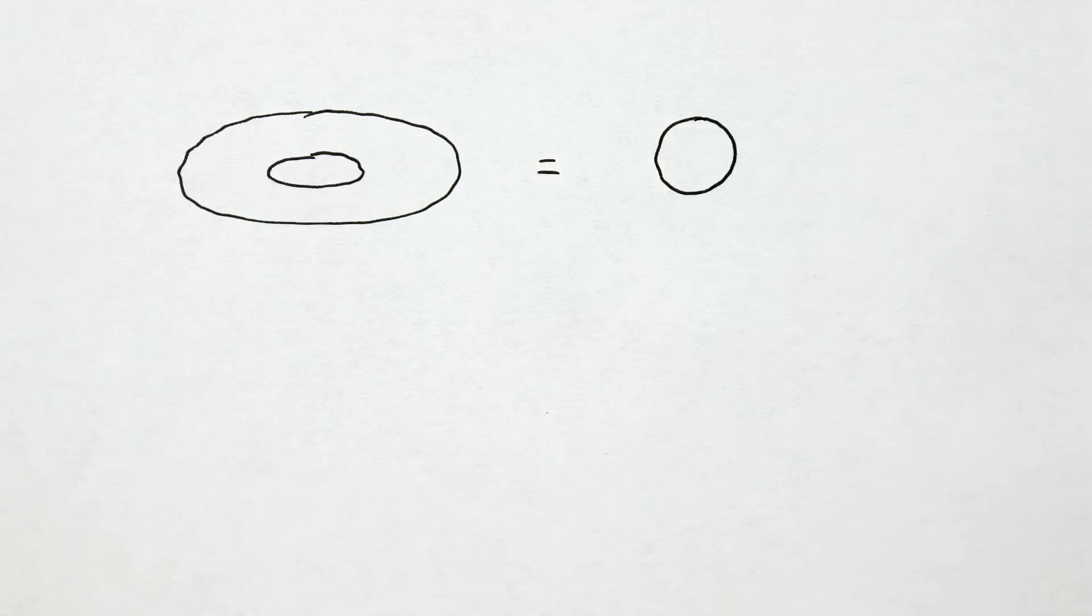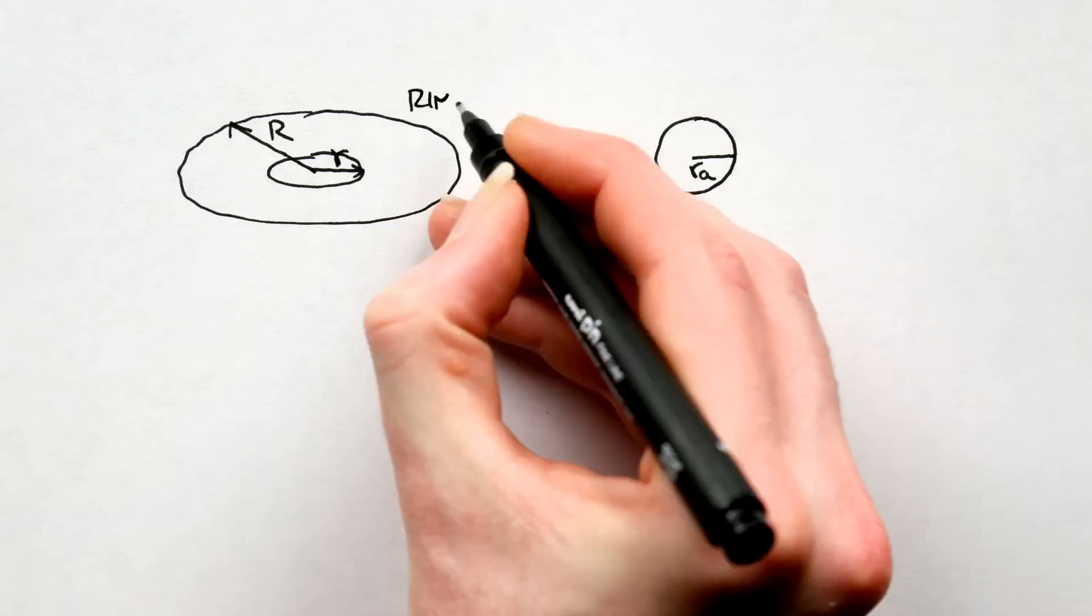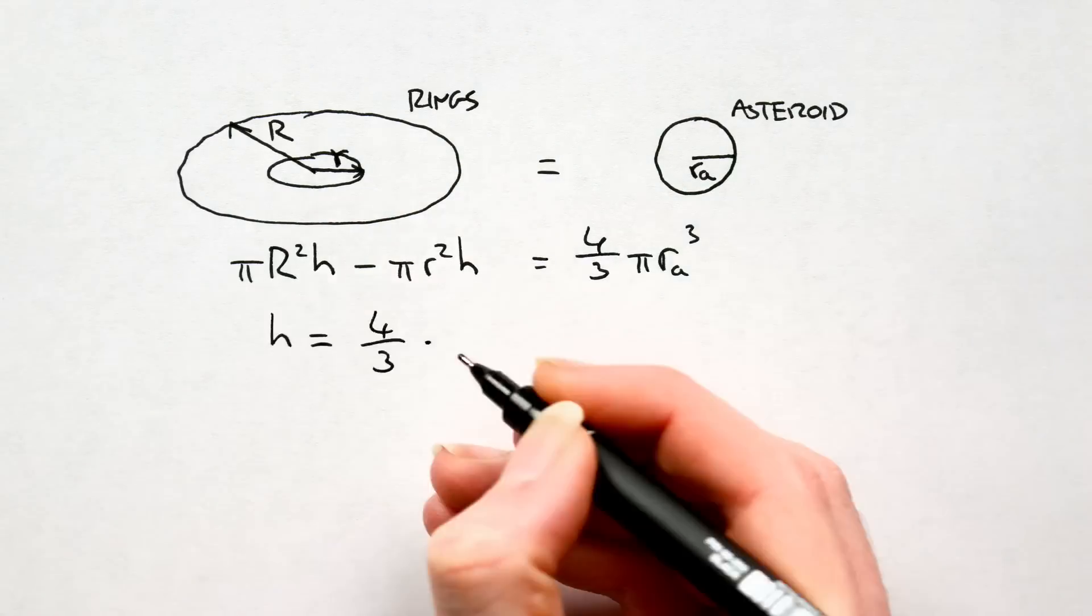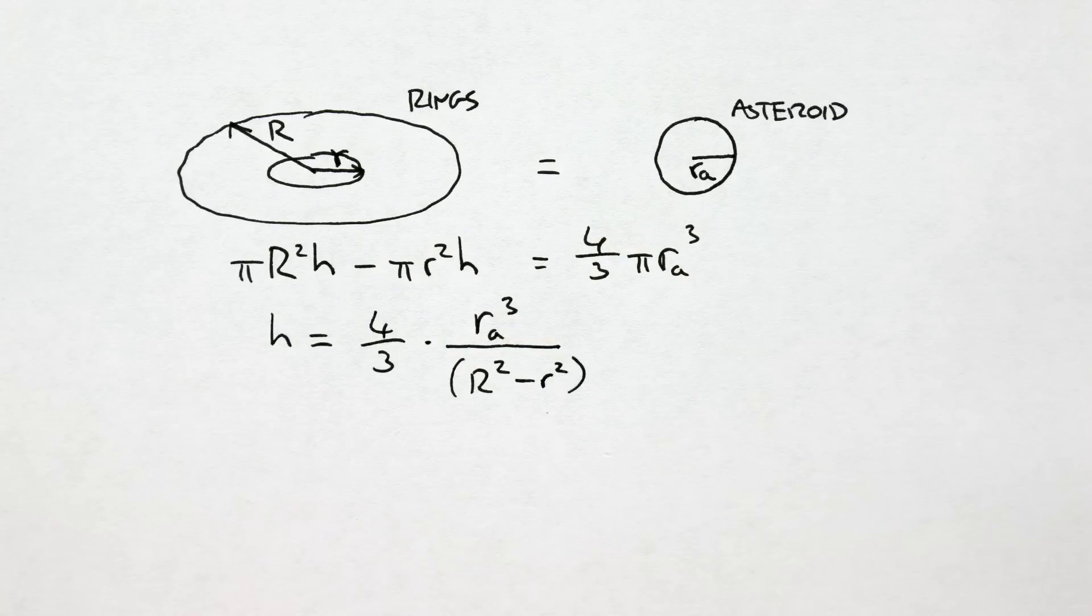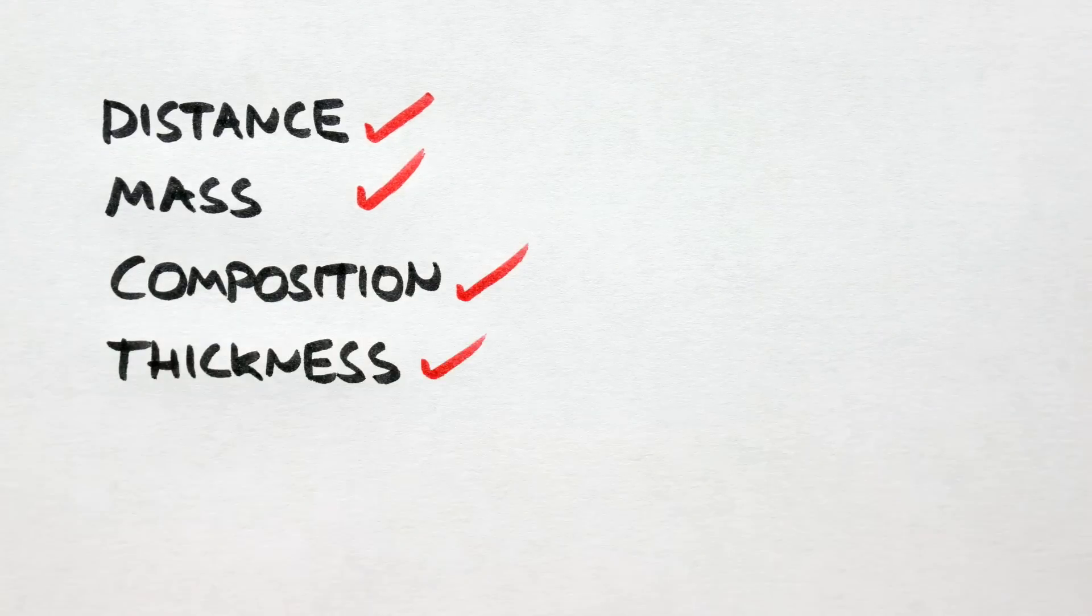Now like Saturn, our Earth rings would be very thin. I ran some crude volumetric equations to roughly gauge the average thickness of our Earth rings. Turns out they're about 9.5 meters thick. Which sounds about right given that the average thickness of Saturn's rings is about 10 meters. So that's distance, mass, composition and thickness covered.